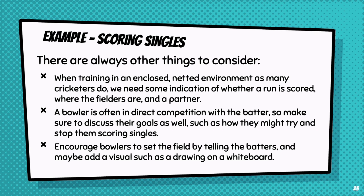Cricket training often occurs in an enclosed, netted environment, so as a batter it's difficult to know how far the ball has travelled, if it was a good shot, and whether or not it scored a run. Learning to score more singles becomes difficult without those decision-making elements. It's also worth noting that while we know a lot about batting behaviours, we often neglect the live bowlers who are integral to our sessions. Make sure you take the time to discuss their goals and plans, such as how they might try to restrict singles through their bowling plan.